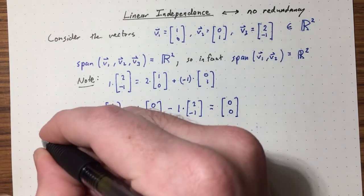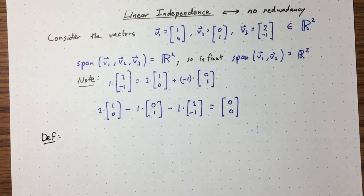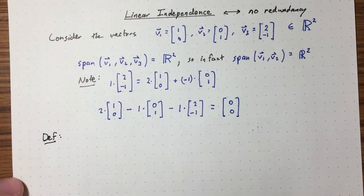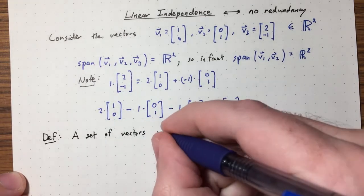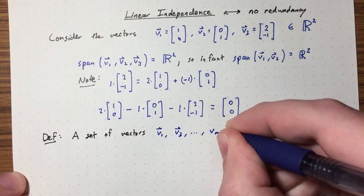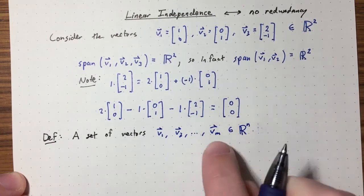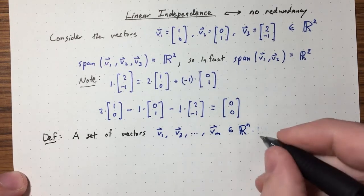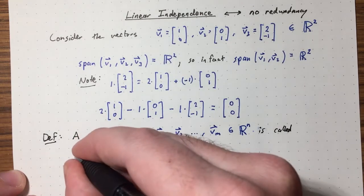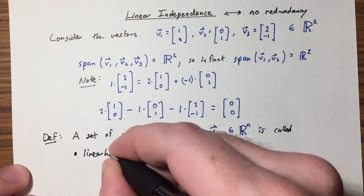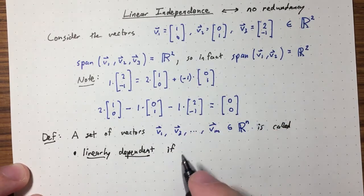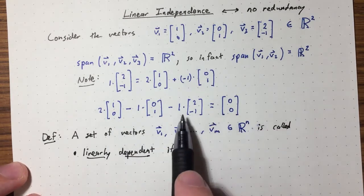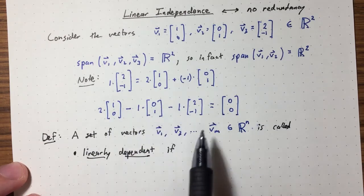This suggests the following definition. I'm actually going to define linear dependence first. A set of vectors V1, V2, ..., Vm in Rn — there's no reason why m has to equal the dimension — is called linearly dependent if we can find scalars such that a linear combination of the vectors equals the zero vector.